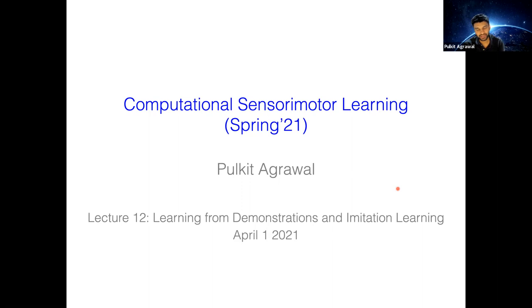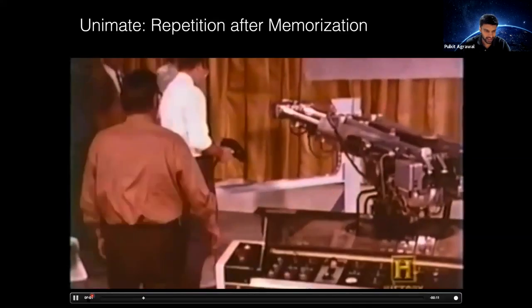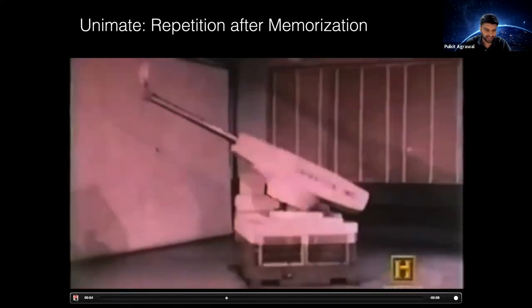That is what we are going to look at in this lecture: what are the challenges which happen when we demonstrate the task, and what techniques are available to overcome those limitations. I'm going to start with probably the first industrial robot called Unimate, one of the earliest examples where the robot was programmed to repeat what the human wanted it to do. This person is moving his joystick and the robot is moving.